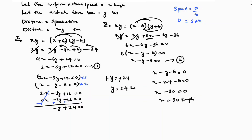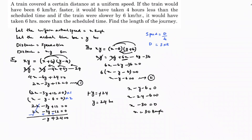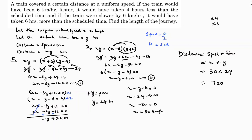But if you look at the question, they are asking for the length of the journey, so we need to find distance. Distance equals speed into time. Speed is x = 30 km/h and time is y = 24 hours. So distance equals 30 into 24, which is 720 kilometers. The length of the journey is 720 kilometers.